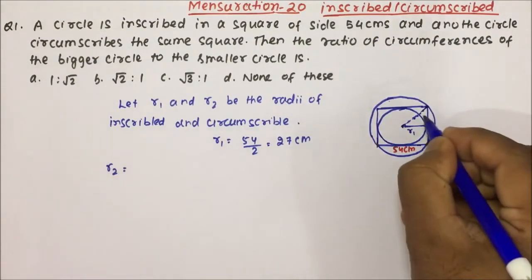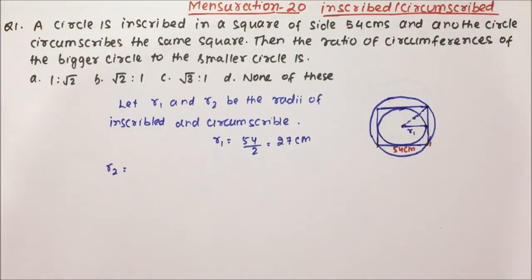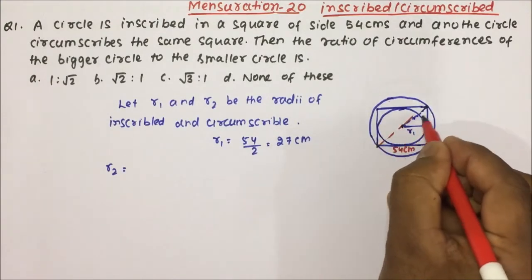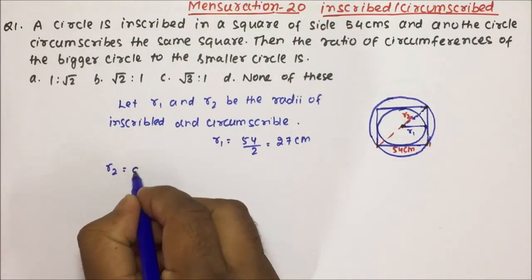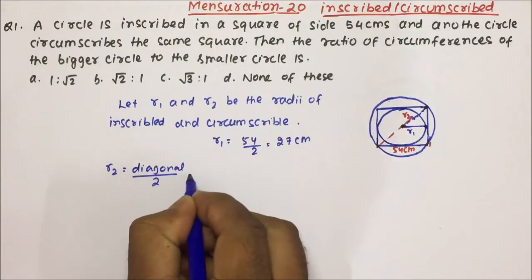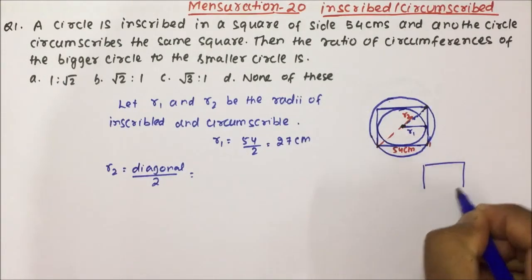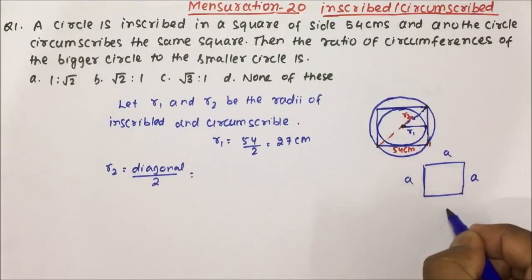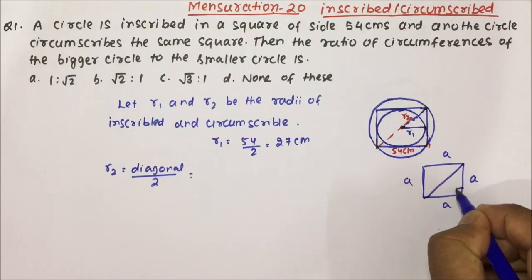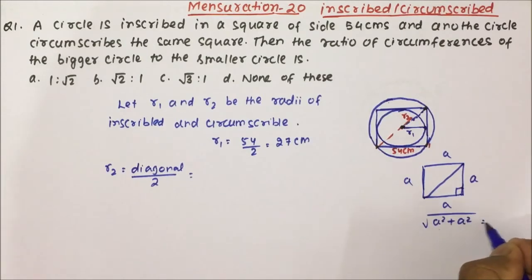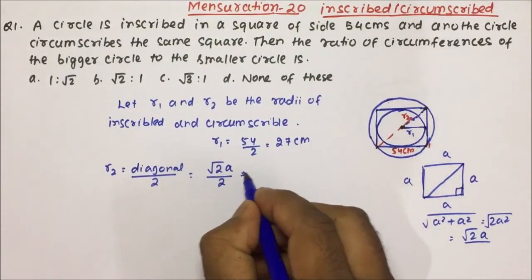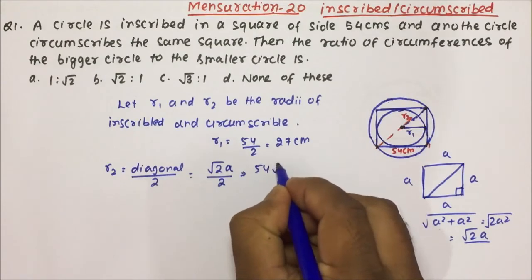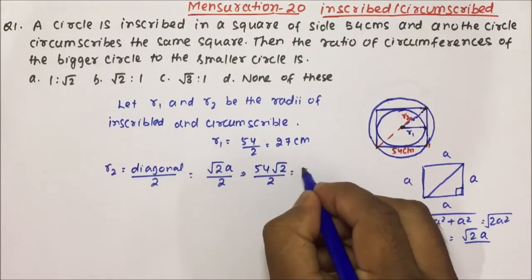Now let's calculate R2. R2 will be nothing but half of the diagonal, because the radius of the circumscribed circle equals half the diagonal of the square. The diagonal of a square is calculated using the Pythagorean theorem: a squared plus a squared under square root, which gives us square root of 2a. So R2 = diagonal divided by 2 = square root of 2 times 54 divided by 2 = 27 root 2.